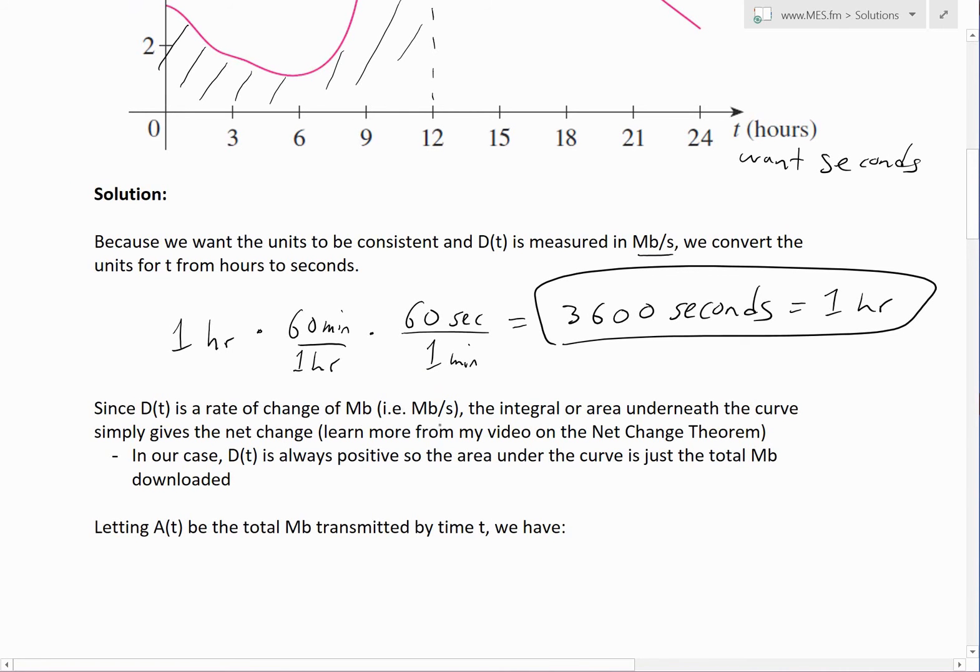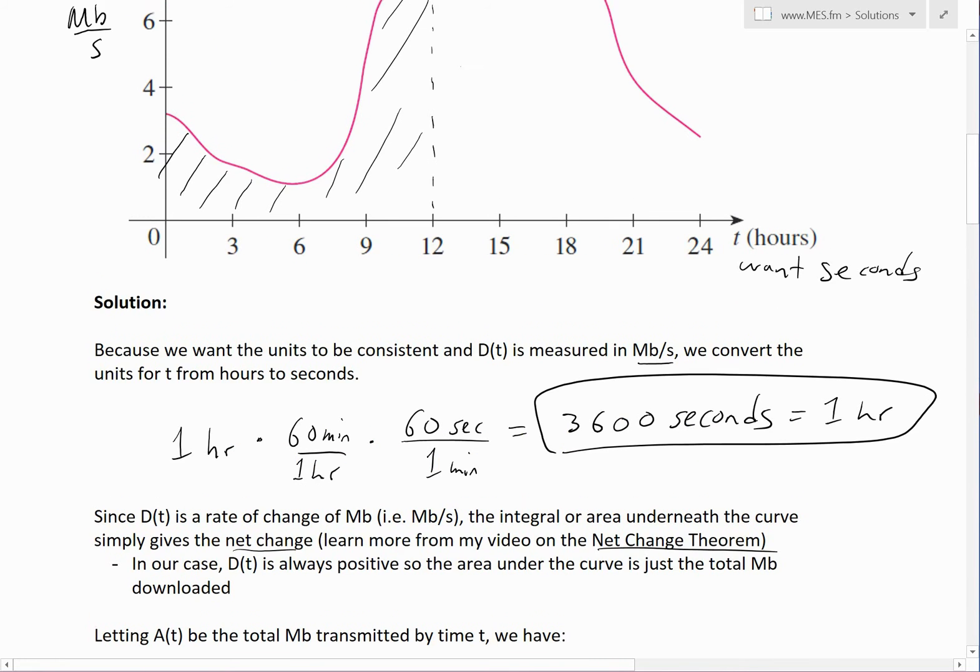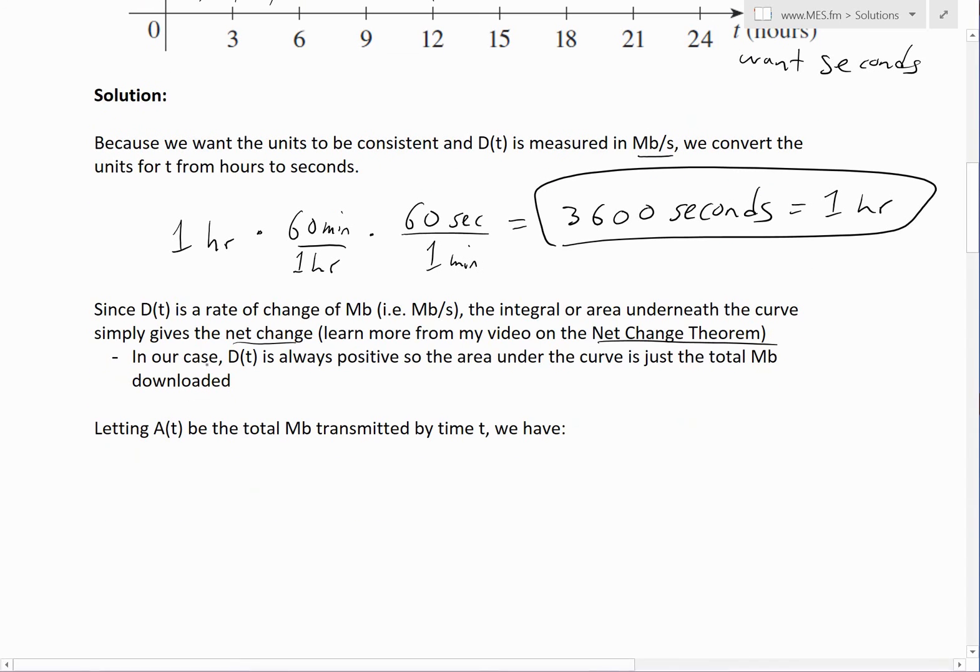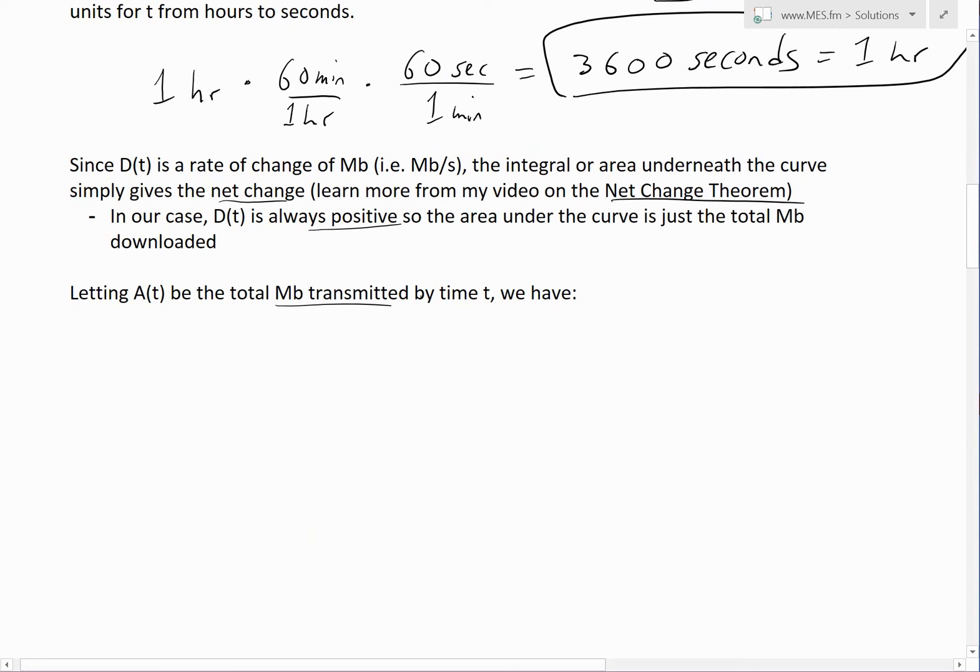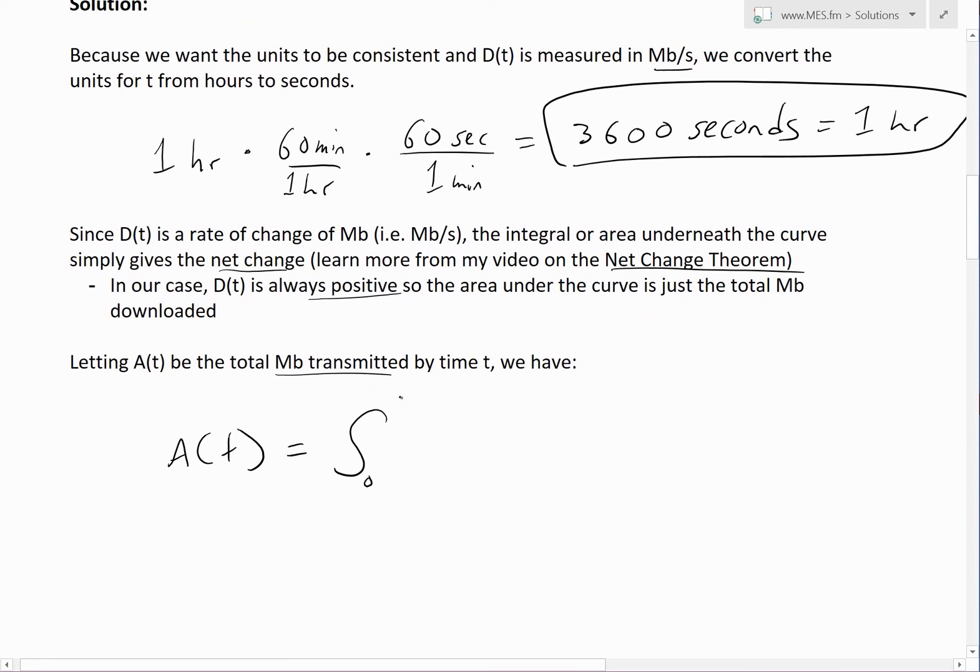This is the rate of change. You'll learn more from my video on the net change theorem, but it's a simple theorem based on just integrals and fundamental theorem of calculus. Basically in our case, since the rate of change is always positive, it's D(T), so the area under the curve is just the total megabits downloaded, or just the integral. So if we let A(T) be the total megabyte transferred by time T, what we have is simply A(T) equals the integral from 0 to time T of D(T) dT.